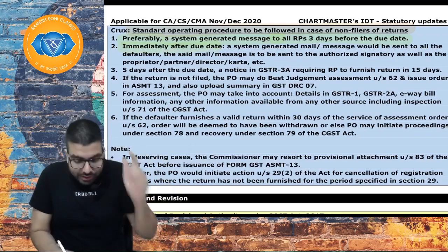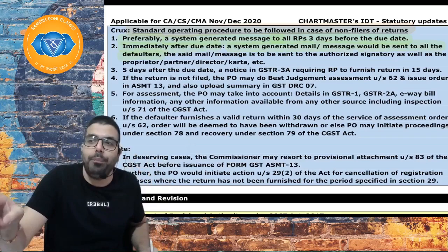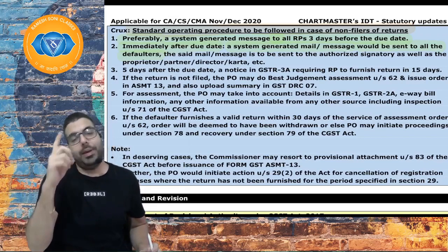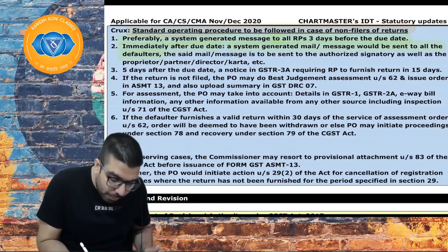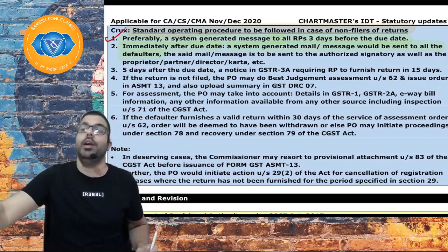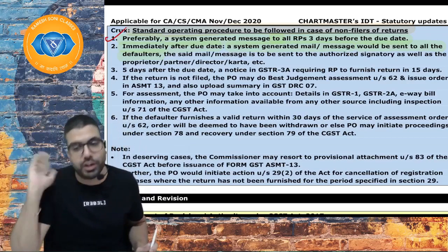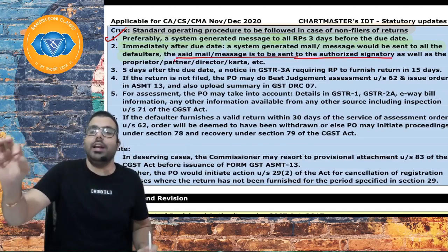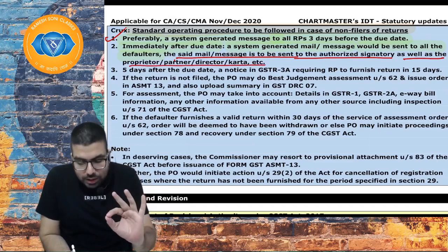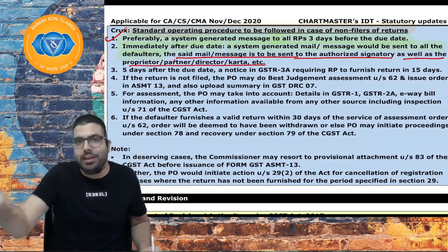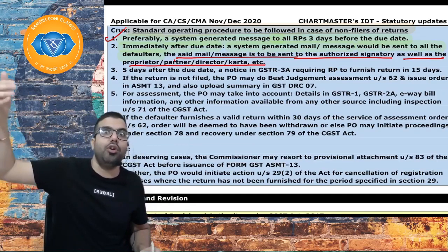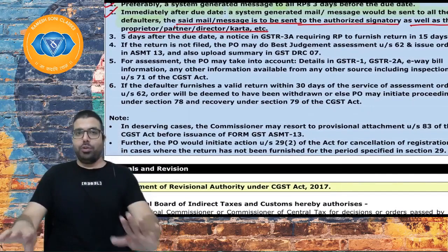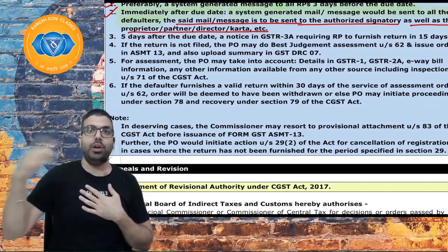Step 2: Immediately after the due date, a system-generated mail or message is sent to all defaulters. This mail is sent to the authorized signatory as well as the proprietor, partner, karta, or director — basically the CEO, managing director, or karta should also receive the mail.